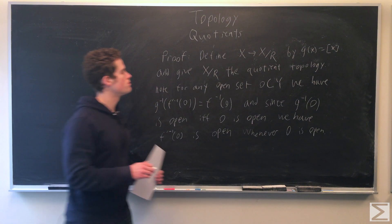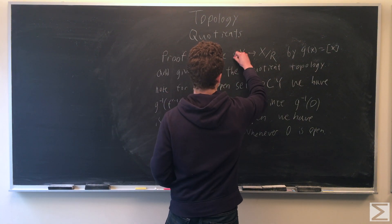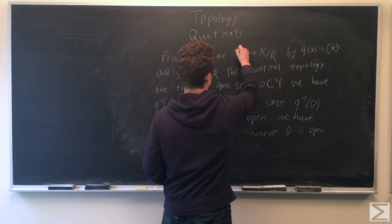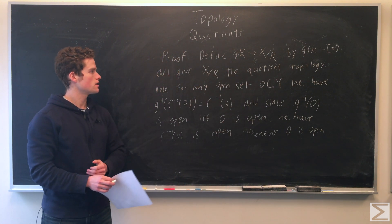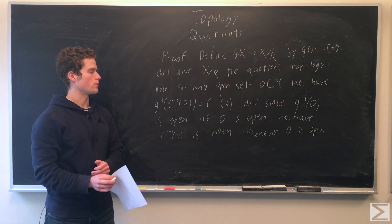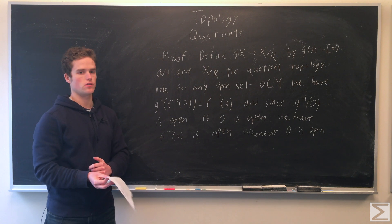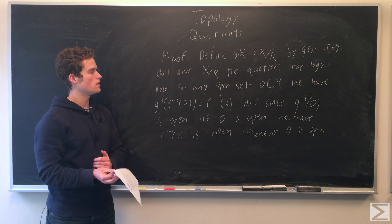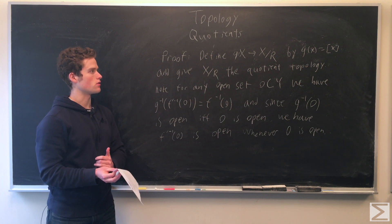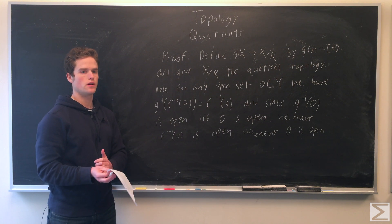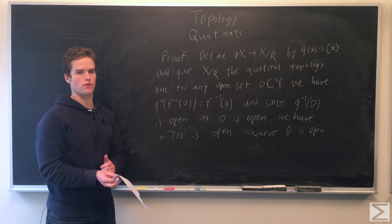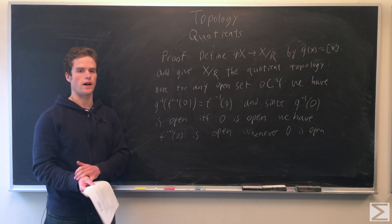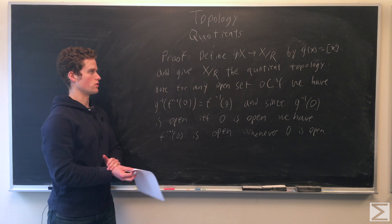So we're going to define a map g by g(x) equals the equivalence class of x. Then we're going to give X/R the quotient topology. So a set in X/R is going to be open if and only if g-inverse of that set is open in X.